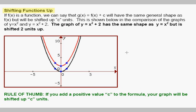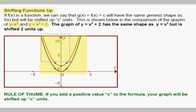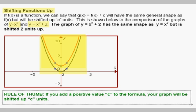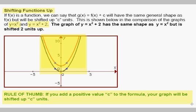Let's take a look at the rule for shifting functions up. Again, let's look at y equals x squared — that's our graph centered at the origin with vertex at (0, 0). If we add 2 to the function, we get y equals x squared plus 2. The result of adding to the formula is to move the graph up by that amount. Our graph looks just like y equals x squared except it's moved up 2, and you can see the vertex has moved from (0, 0) to (0, 2). The rule of thumb is that if you add a positive value c to the formula, your graph will be shifted up by that amount.